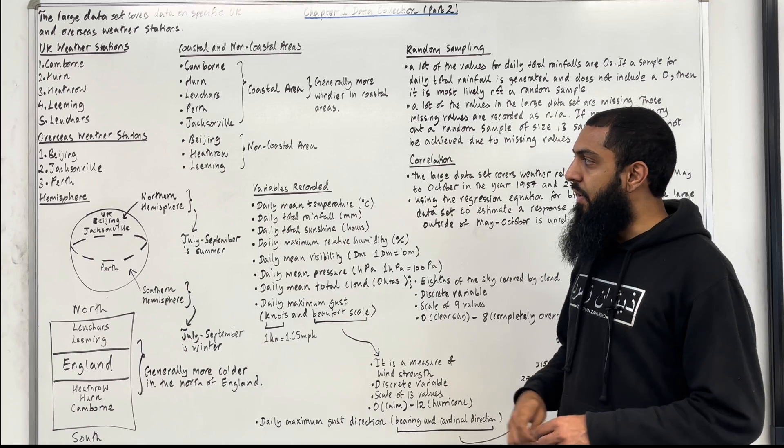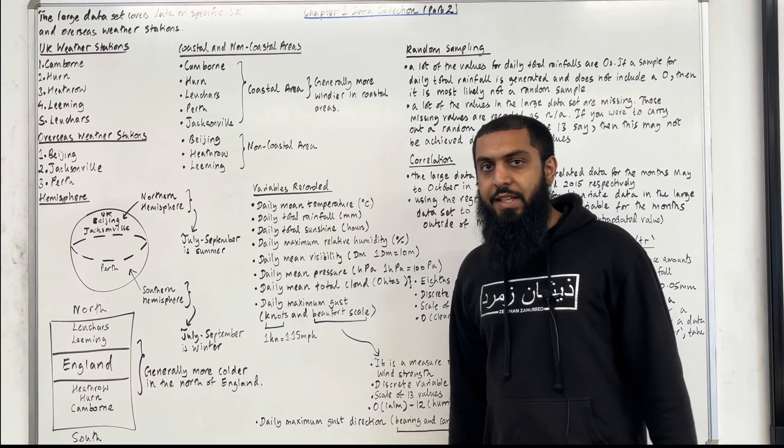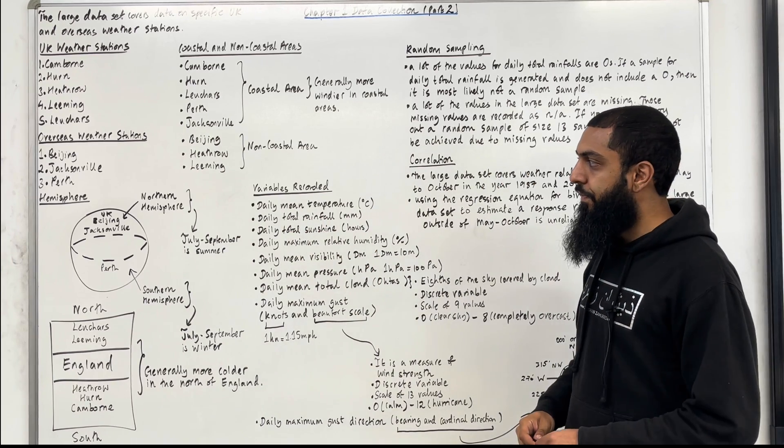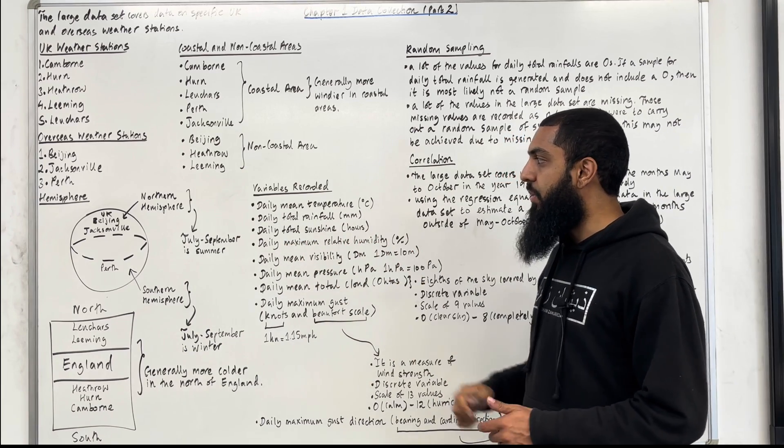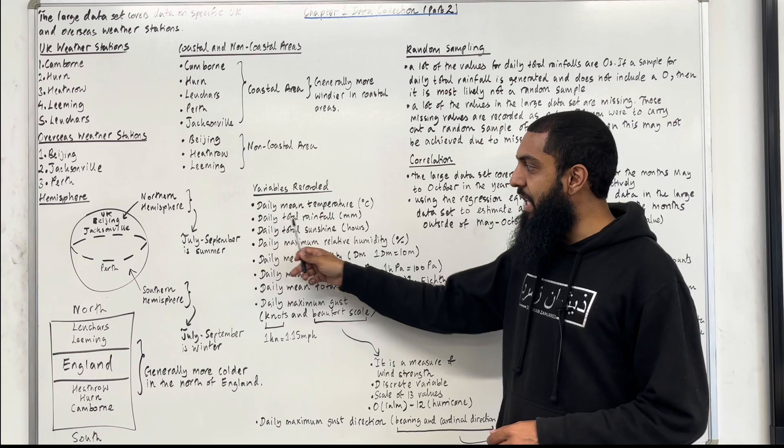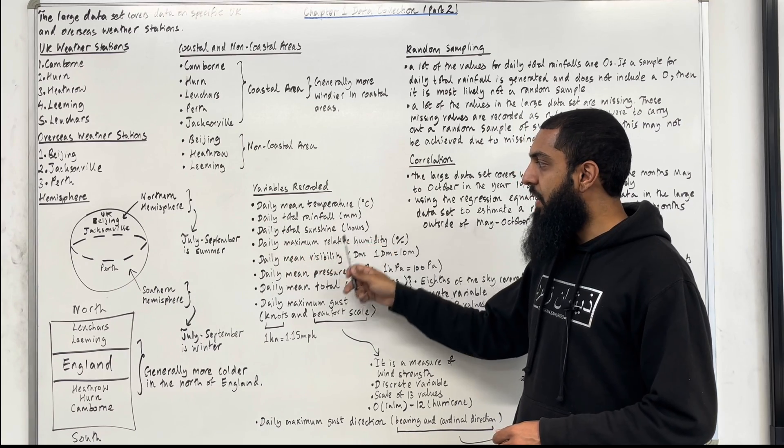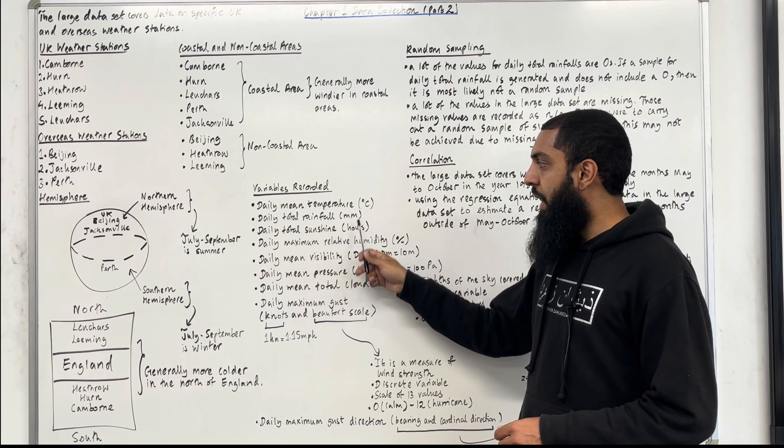Now we are going to look at the variables recorded in the large data set and their units. Firstly we have daily mean temperature recorded in degrees Celsius. Then daily total rainfall in millimeters. Daily total sunshine in hours.